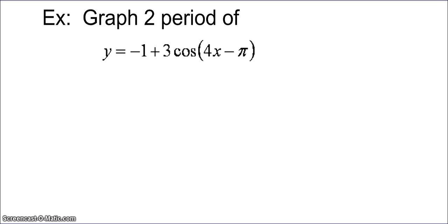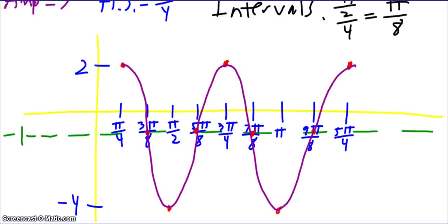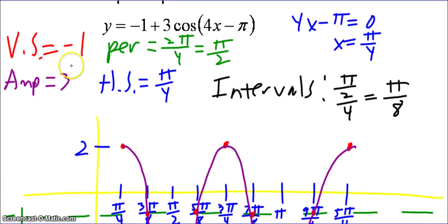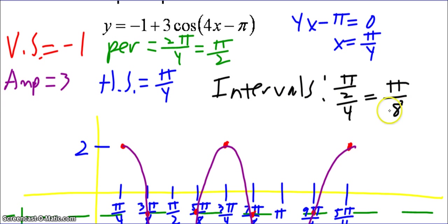Graph two periods of y equals negative one plus three cosine of four x minus pi. Pause the video and unpause when you're ready to check your work. Here our graph should look like this. We have a vertical shift of negative one, an amplitude of three, a period of pi halves, a horizontal shift of pi fourths, and an interval of pi eighths.